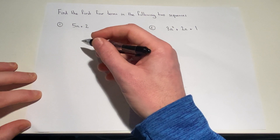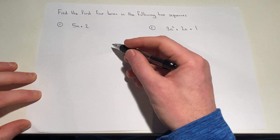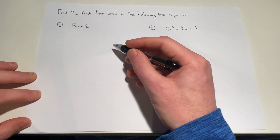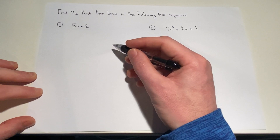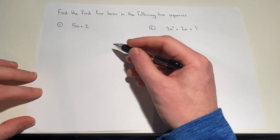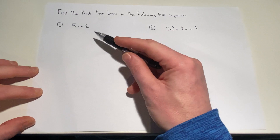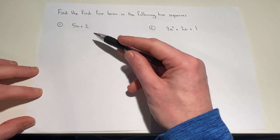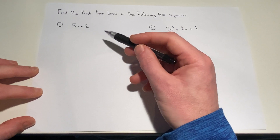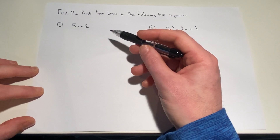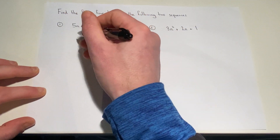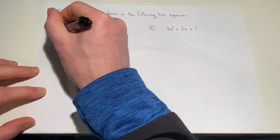This video reviews how to find the first four terms of two different sequences. The first sequence is given by 5n plus 2. To find the first four terms, we do the following: we have to substitute in four values.